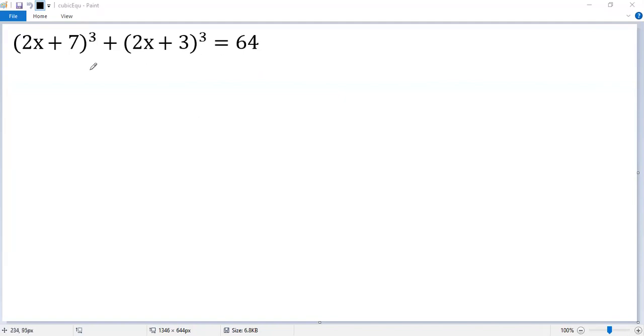First, we do a substitution. Let t equals the average of the two bases. So let t equals 2x plus 5.